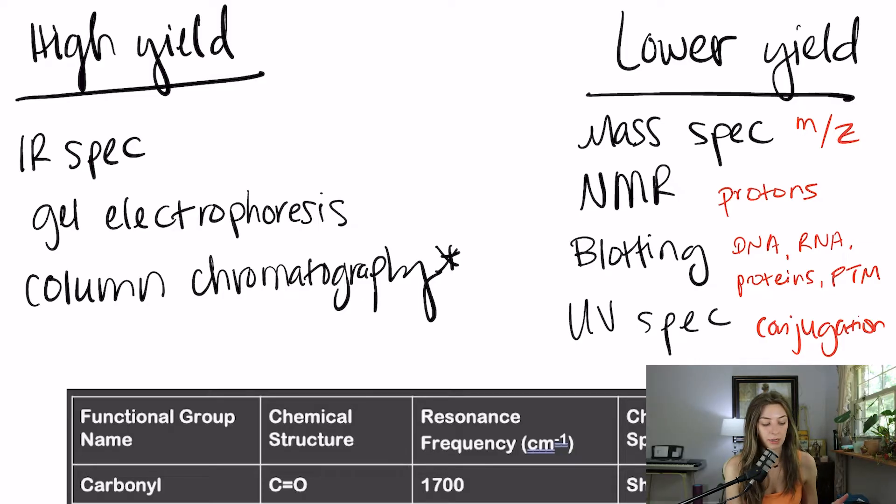For completeness sake, I've listed pretty much all the lab and separation techniques you're going to want to know for the MCAT, but they're not all high yield. I've separated them up into high yield and lower yield, and I'll be going over the high yield ones in the videos. Our high yield ones are IR spectroscopy, gel electrophoresis, and column chromatography. Our lower yield ones are mass spec, NMR, blotting, and UV spec.